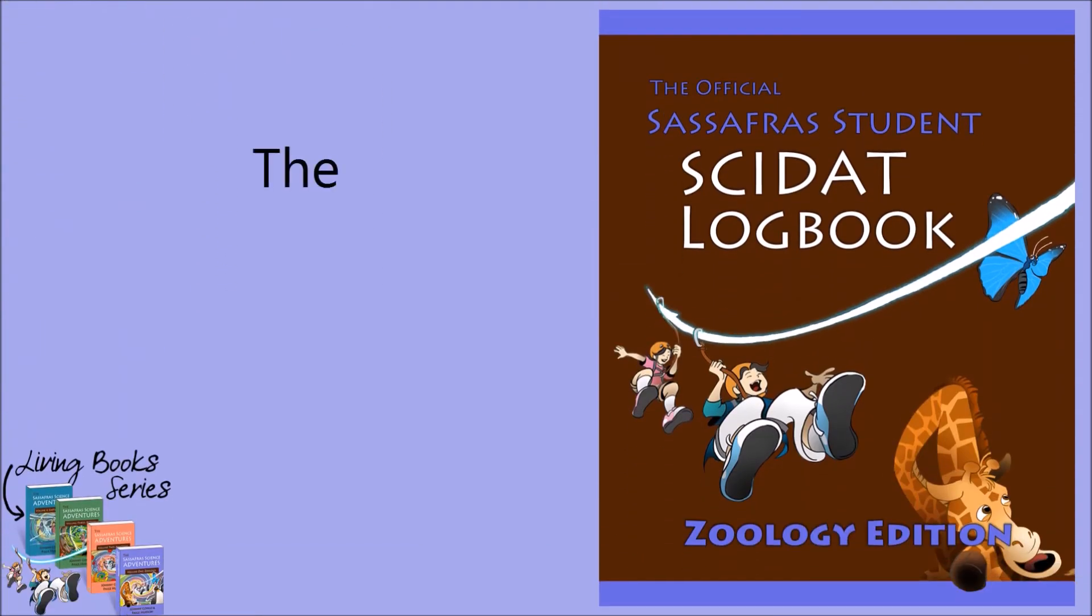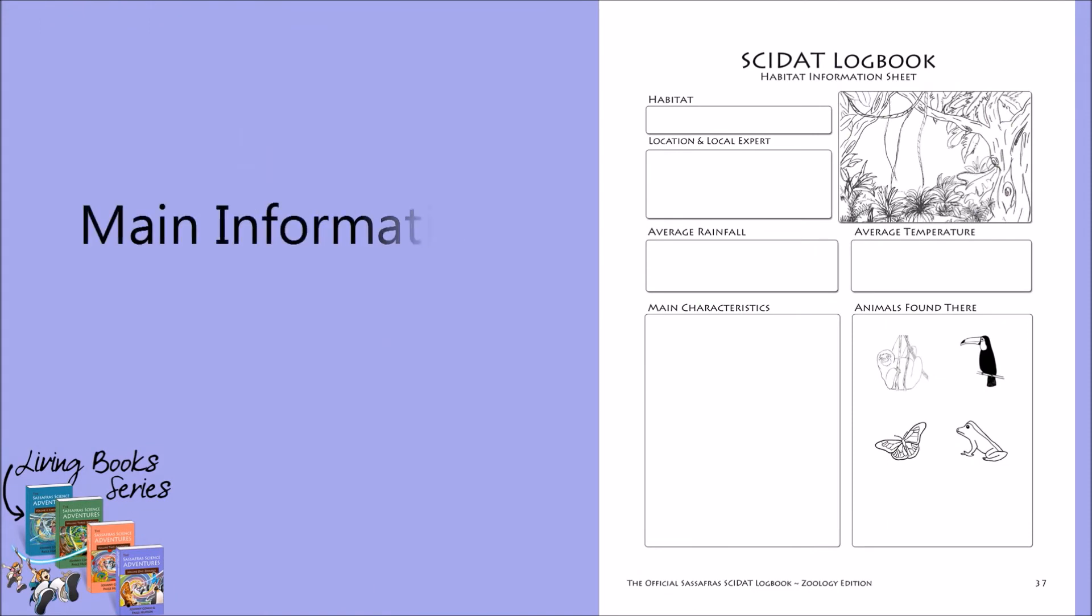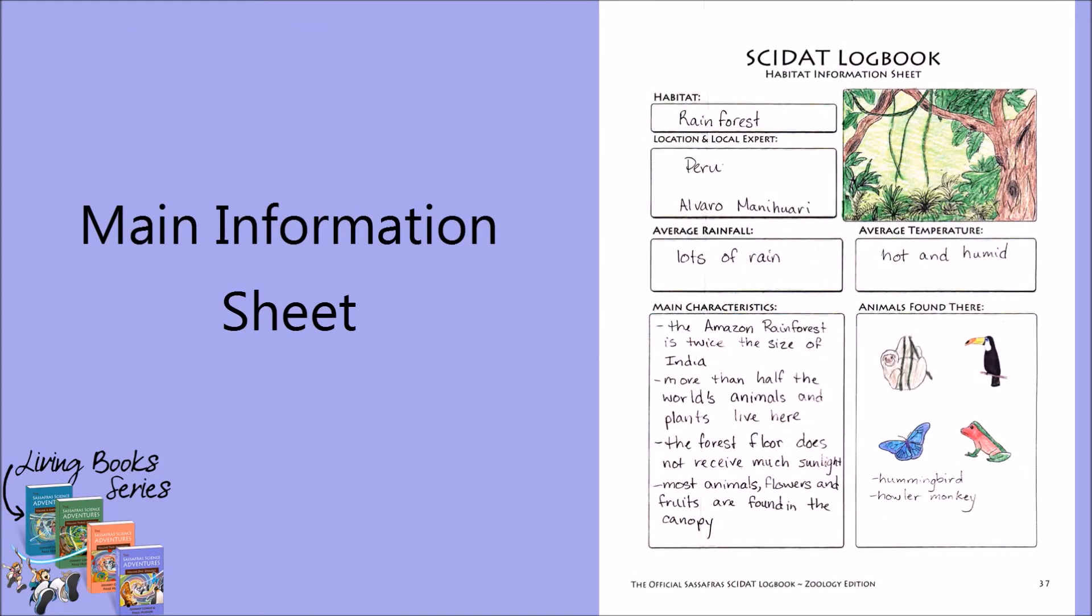Now, let's take a look at the CIDAT logbook, which begins with a table of contents for easy reference. Each location section begins with a main information sheet, where students can record information they've learned about broader topics from the novel.